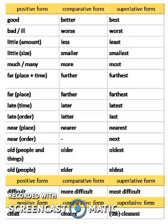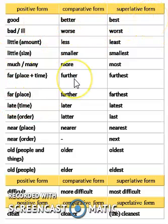Hello and good morning dear students. If you remember, we had studied about different degrees of comparison where the words were counted as positive form, and then comparative, and then superlative. Positive form is for one, and then comparative.